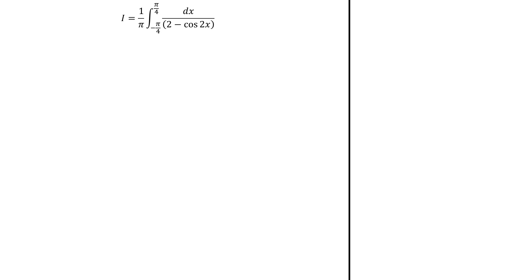We will write I as follows. Now, we'd like to have cosine of x in the denominator. To do so, we just use this duplication formula and I will write as follows.